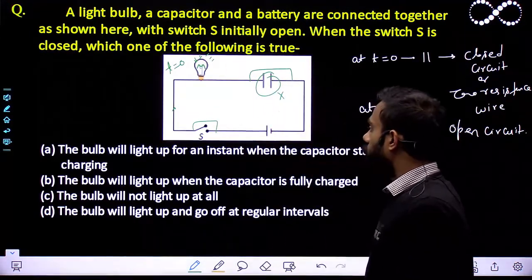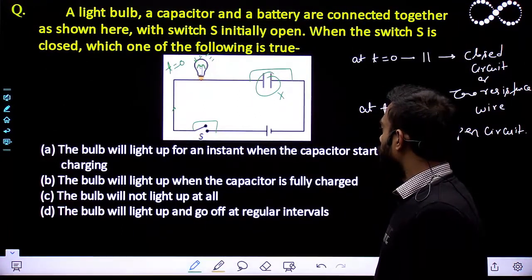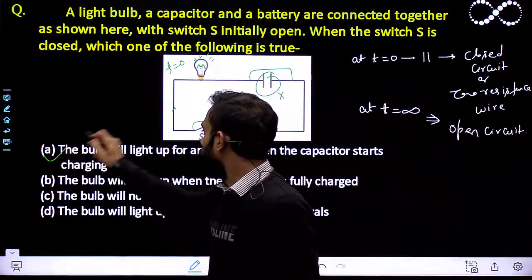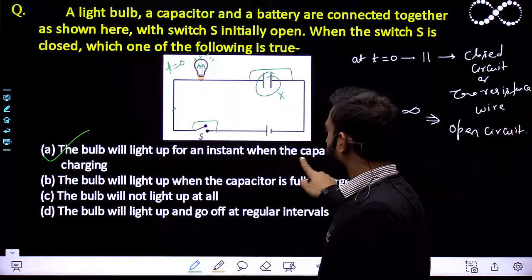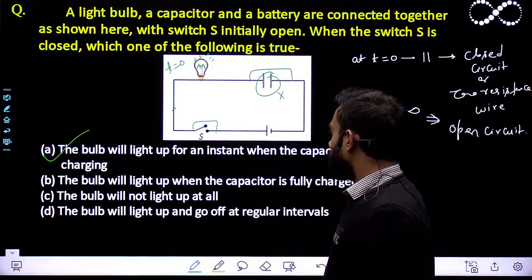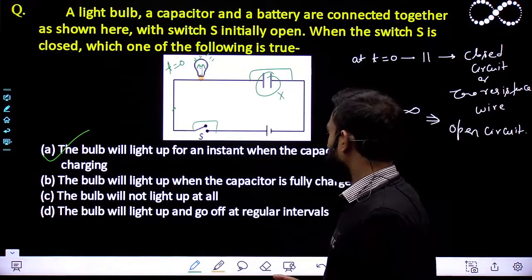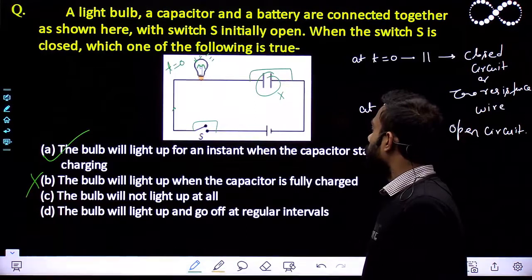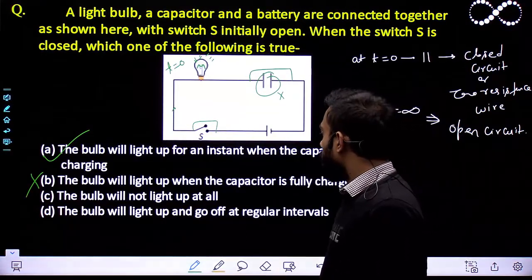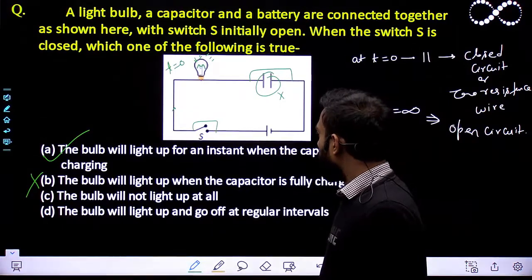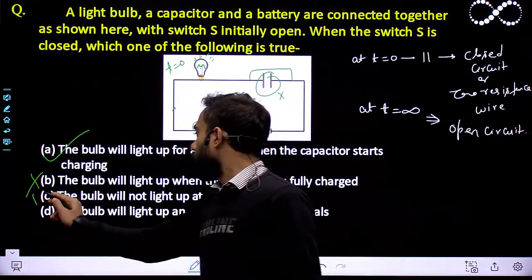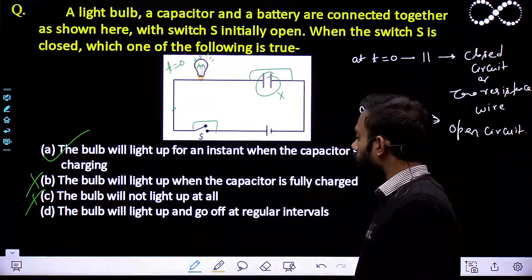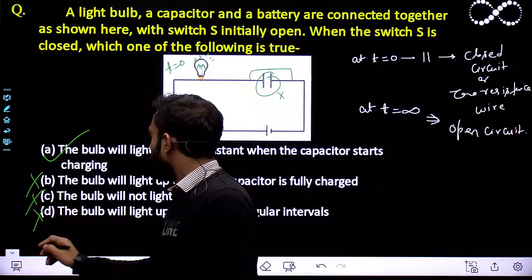Let us see which option is correct. Option A says the bulb will light up for an instant when the capacitor starts charging — this is correct, it will glow. Option B says the bulb will light up when the capacitor is fully charged — this is wrong, because when the capacitor is fully charged, no current will flow and the bulb will not glow. Option C says the bulb will not light up at all — this is wrong. Option D says the bulb will light up and go off at regular intervals — this is obviously wrong. So option A is correct.